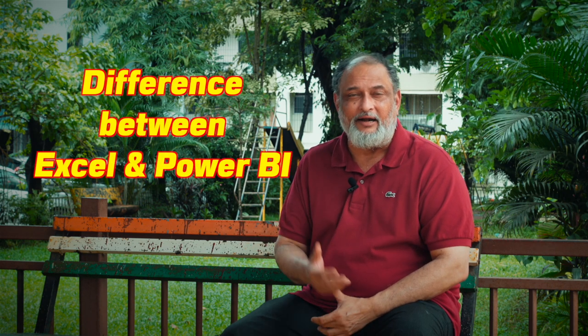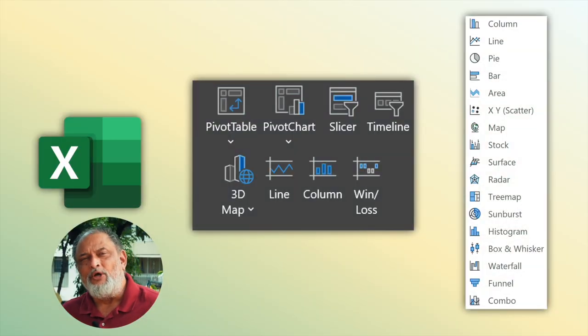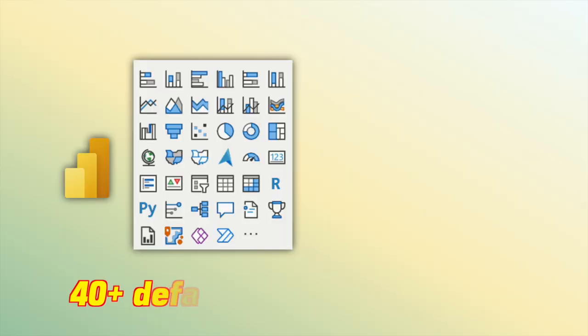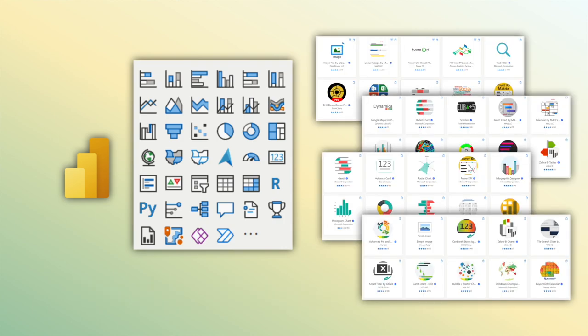Once the data is inside, we want to analyze and visualize it. That is where the key difference between Excel and Power BI comes. In Excel, we have pivot tables where we drag and drop things, and we have pivot charts. Something similar does exist in Power BI, but in Power BI you get 40 plus default visuals and there is a large ecosystem of hundreds of visuals available to choose from.